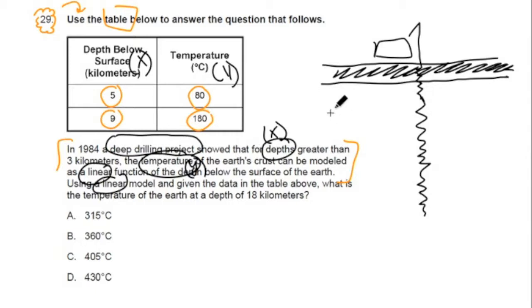And we can map those out on our visual here. For example, if we dig down 5 kilometers, well, temperature's 80 degrees Celsius. And if we dig down further, let's say to 9 kilometers, temperature's 180 degrees Celsius.